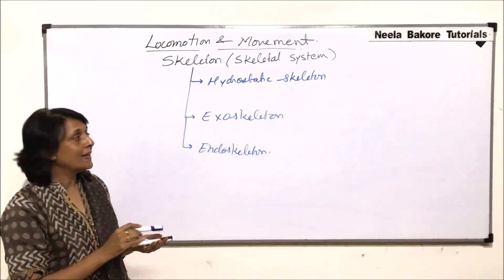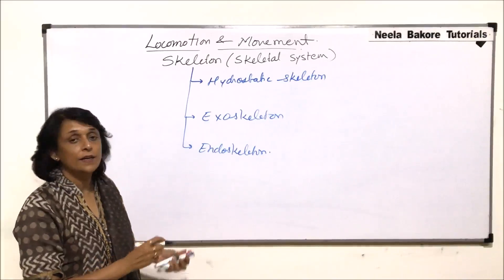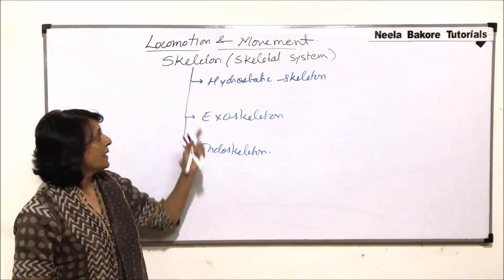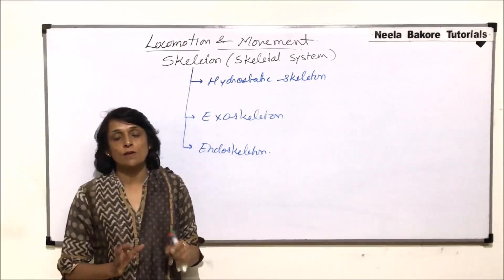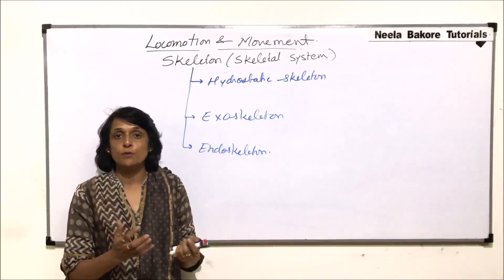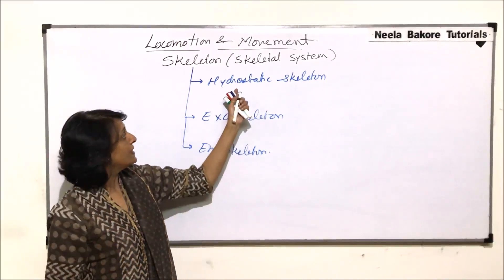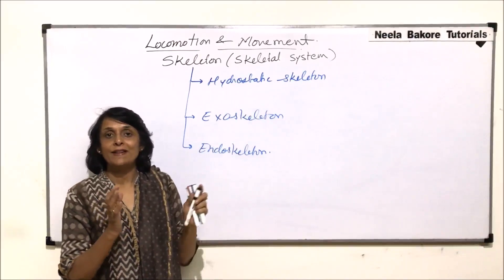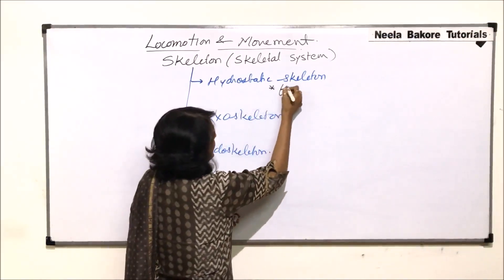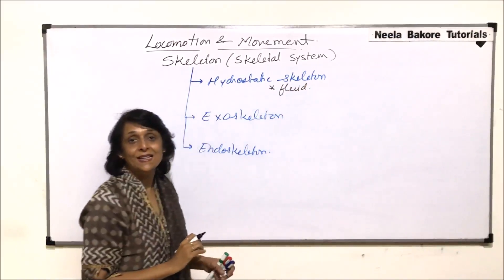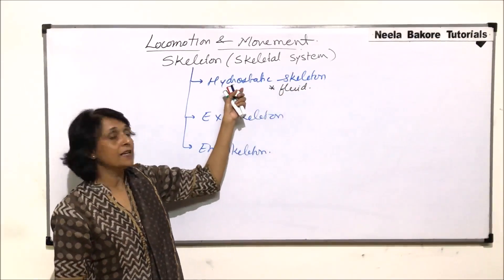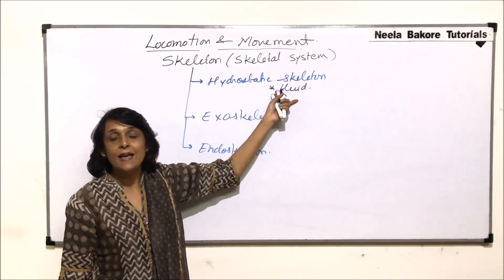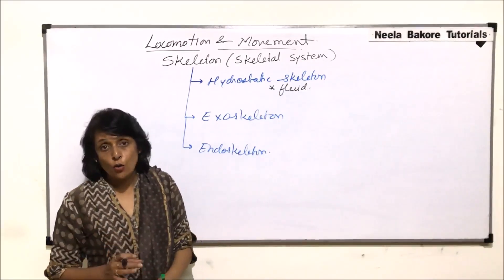The first type is the hydrostatic skeleton, where a liquid is used to provide strength or shape. The function of the skeletal system in general is to provide a framework and give shape to the body of the organism. In the hydrostatic case, a fluid or liquid provides that framework, which is why we call it a hydrostatic skeleton.